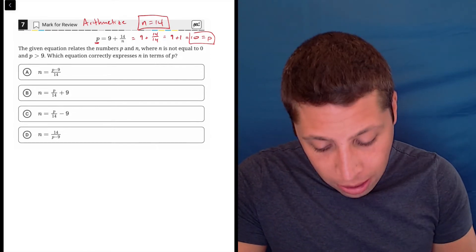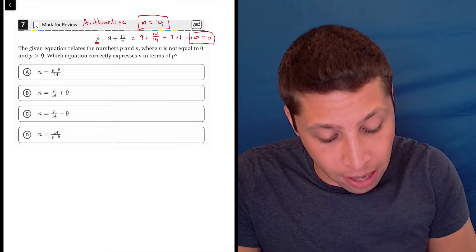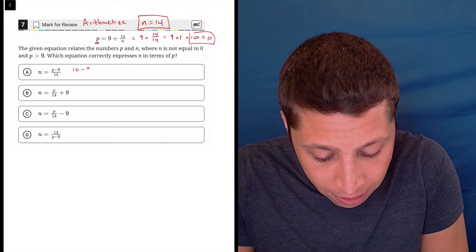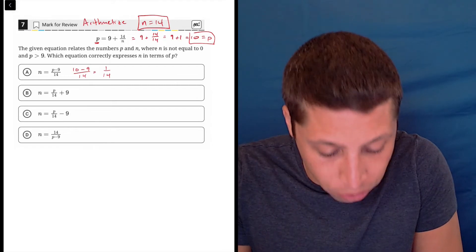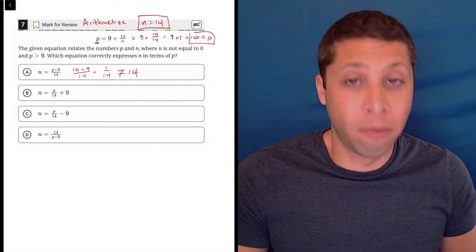So, again, n is 14, p is 10. What I would do is just take the complicated side and plug in 10 for p. So, that would be, in choice A, 10 minus 9 over 14. Well, that's 1 over 14. That's not what it should be, which is regular old 14.